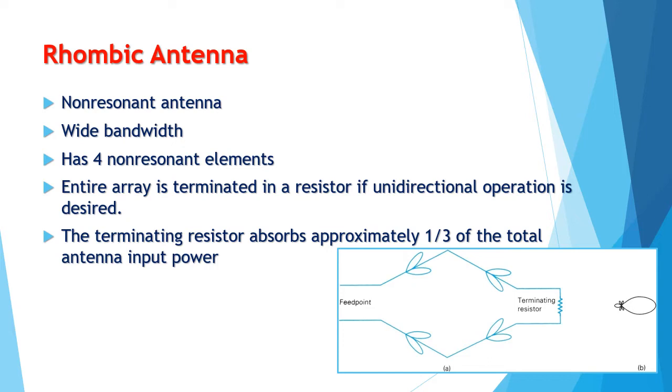Therefore, the rhombic antenna has a maximum efficiency of only 67%, and gains over 16 decibels can be achieved.